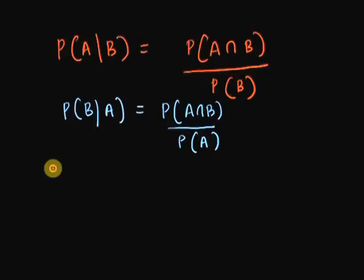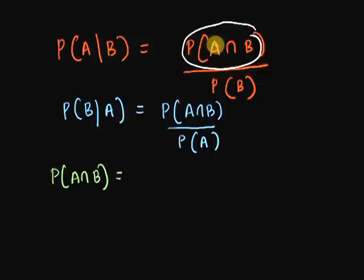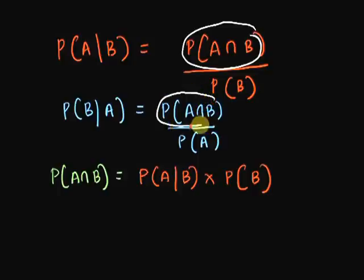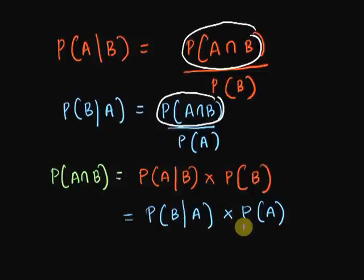So looking at these two formulas, what can we say about A intersection B? From our first formula, it would be equal to this. And from the second formula, it would be this, conditional probability of B given A into probability of A. So there are two ways in which we can calculate the intersection of dependent events A and B, if I know their conditional probabilities.